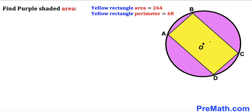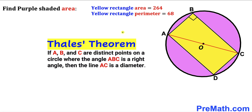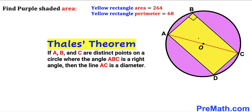Let's make an observation: since we are dealing with rectangle ABCD, all interior angles must be 90 degrees. Let me connect point A and C. Now let's recall Thales' theorem — if A, B, C are distinct points on a circle and angle ABC is a right angle, then line AC is a diameter. In this diagram, the angle is 90 degrees and points A, B, C lie on the circle, so we conclude that AC is indeed a diameter passing through center O.